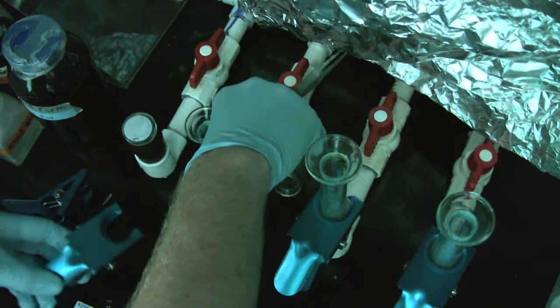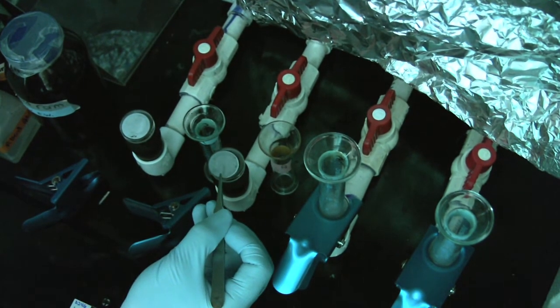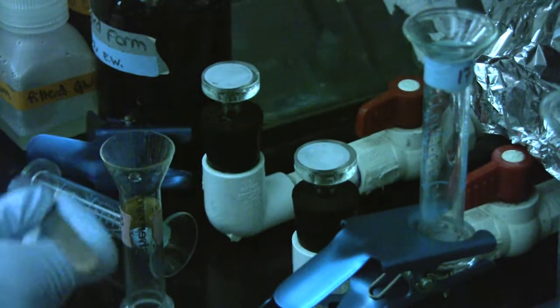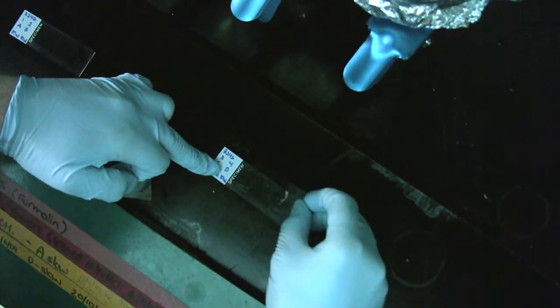Then we removed the filters from the suction apparatus, making sure not to flip them over because the bacteria is on one side, and placed them onto glass slides with oil. We put oil on first, then the filter, then added cover slips with more oil, and repeated that for each slide.